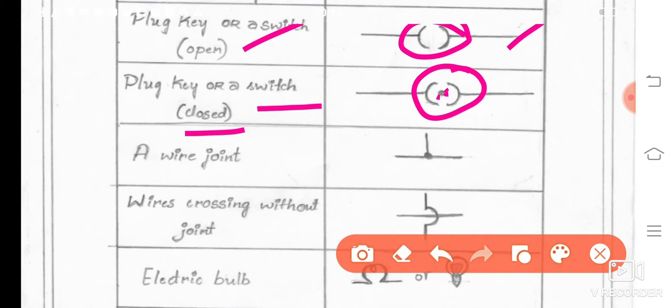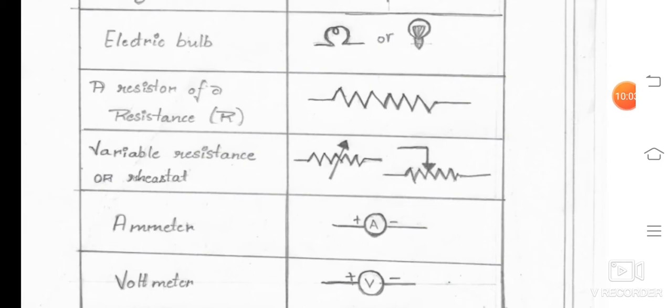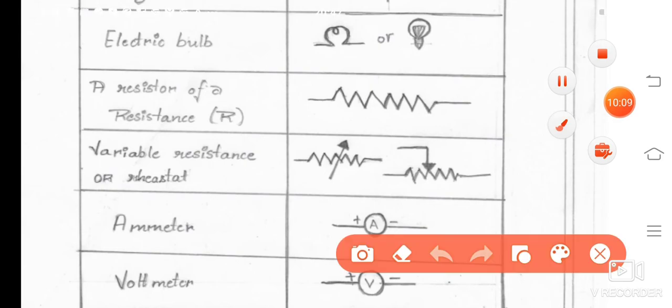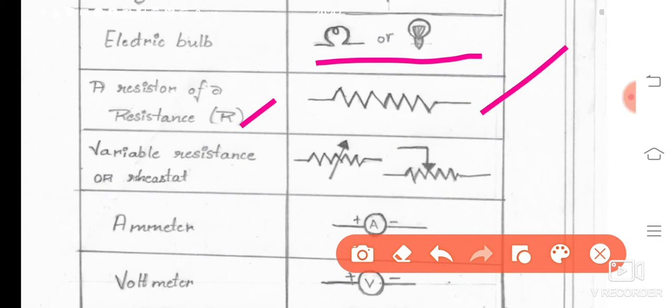Next, a wire joint. A wire joint is like this. Next, wires coming without joint is like this. Next, electric bulb. Electric bulb, you can mention in both the ways that you can observe here. Next, a resistor of a resistance R. Variable resistance or rheostat is like this.